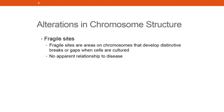Fragile sites are sites with breaks or gaps within chromosomes that can actually be seen via microscope when cells are cultured. There is really no evidence that most fragile sites are related to any disorder. However, fragile X syndrome is a notable exception — its most important feature is mental retardation, and it is fairly prevalent: one in 4,000 males and one in 8,000 females will develop it.